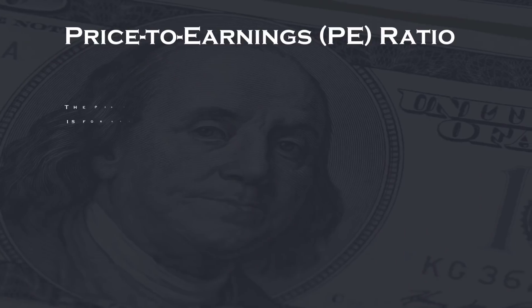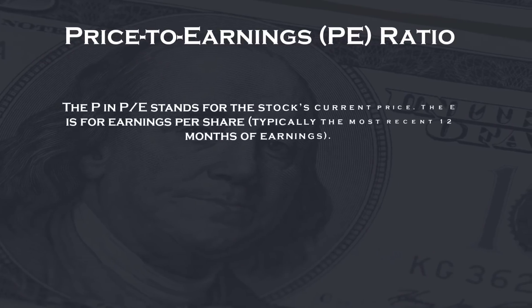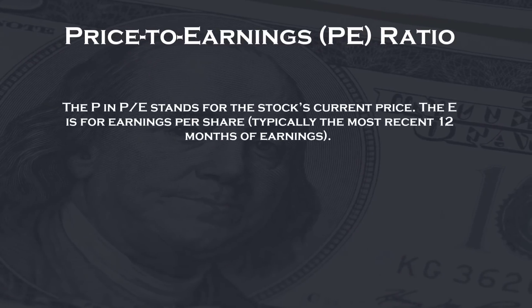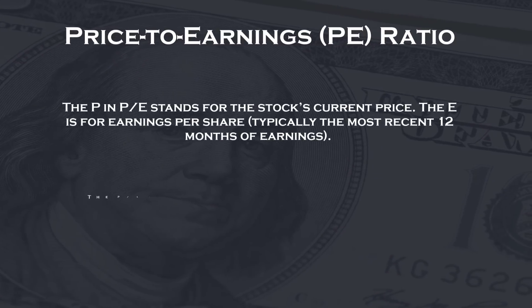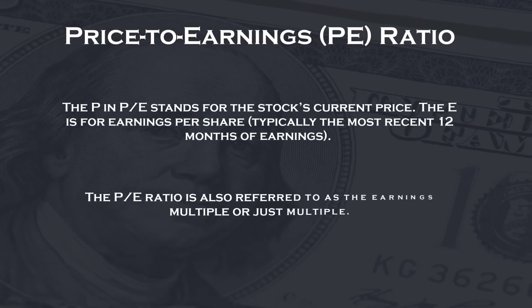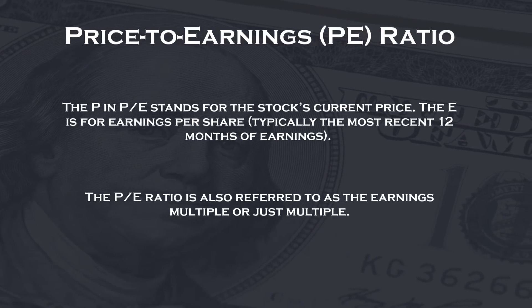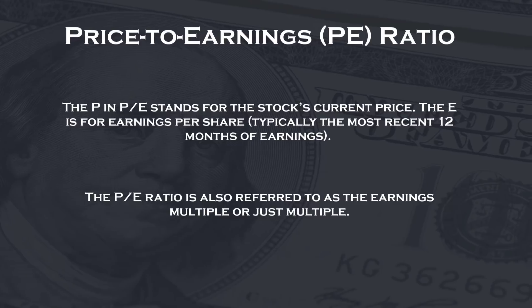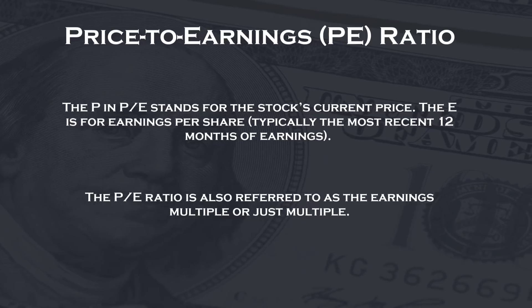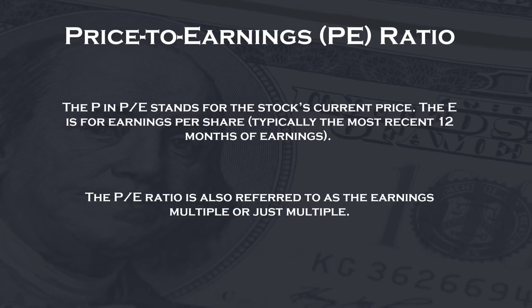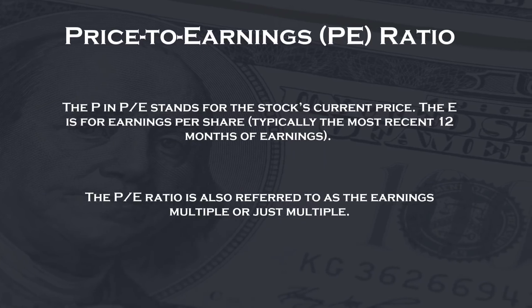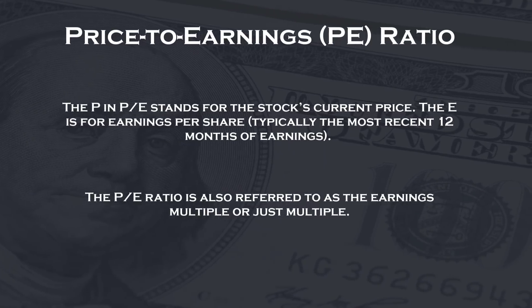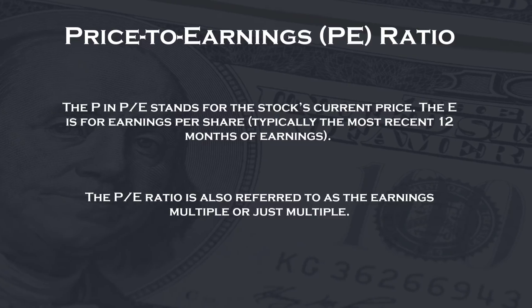The P in PE stands for the stock's current price. The E is for earnings per share, typically the most recent 12 months of earnings. The PE ratio is also referred to as the earnings multiple, or just multiple.